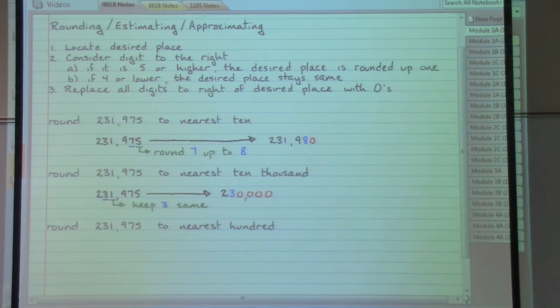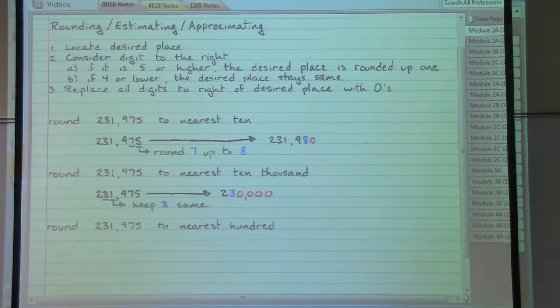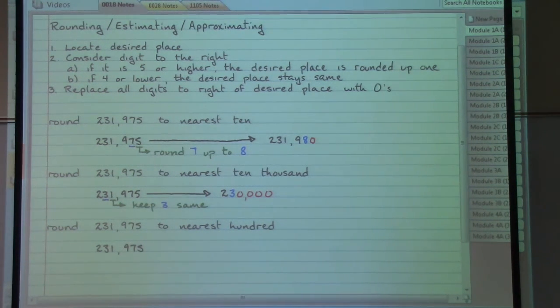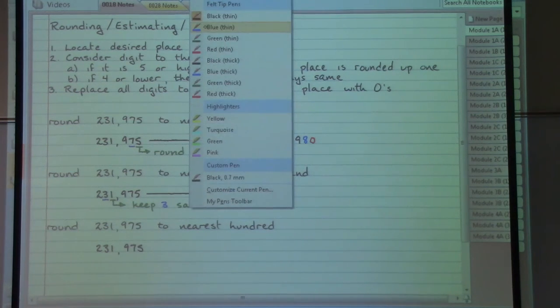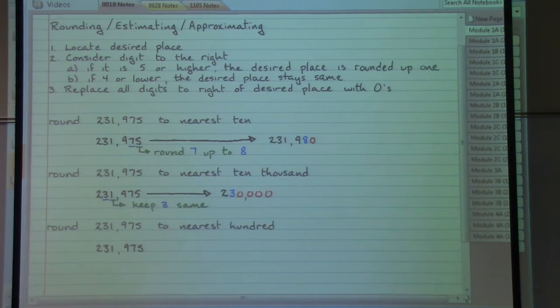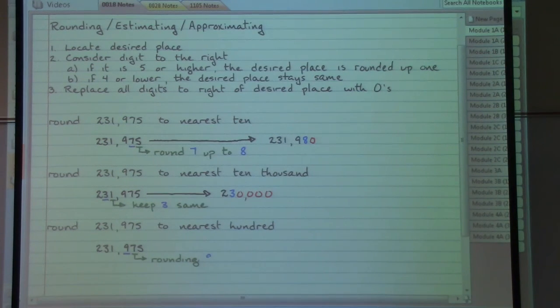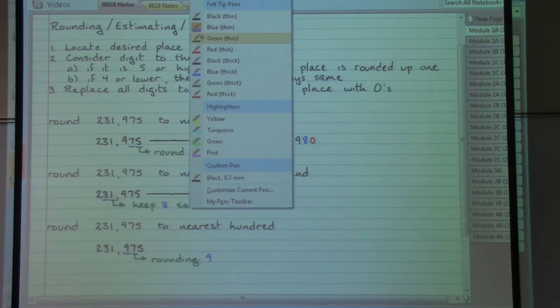Now in the final example, again just mixing things up in terms of the place names that are mentioned in these examples, we need to locate the hundreds place. The five is in the ones place, the seven is in the tens place, the nine is in the hundreds place. We now want to look at the number to the right of that. We have a seven.